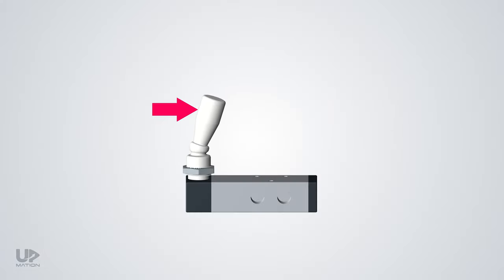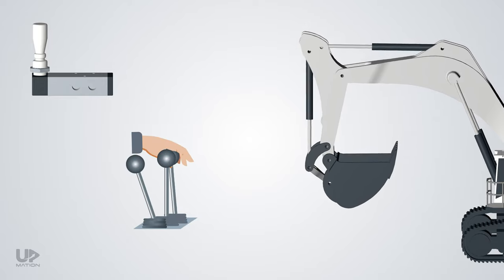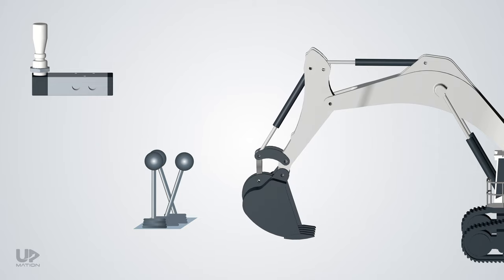We can actuate the valve using a normal lever. Imagine a mobile excavator operator that uses these hand levers to operate different hydraulic directional control valves in the machine to move the bucket and other parts.